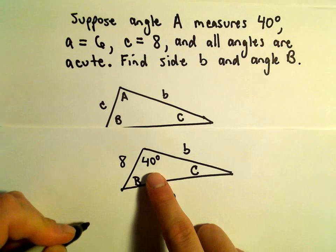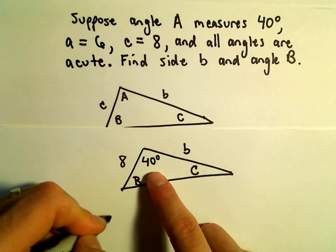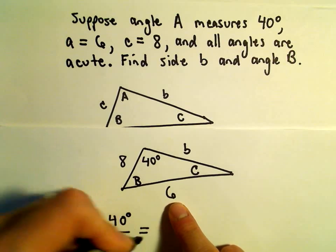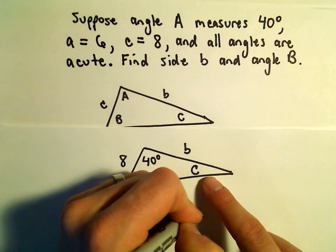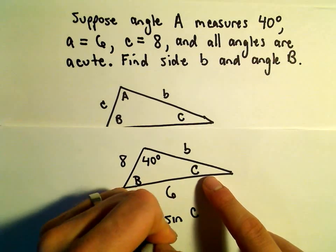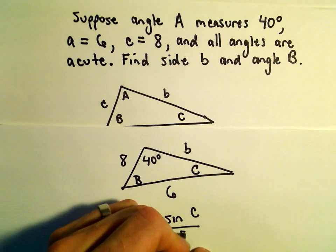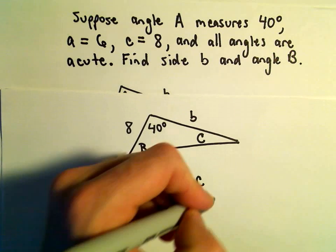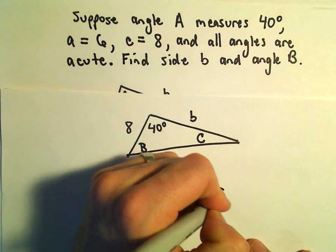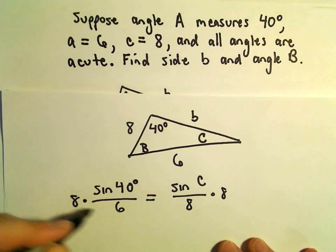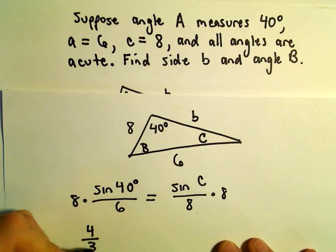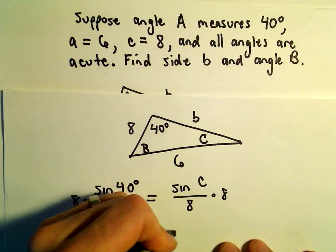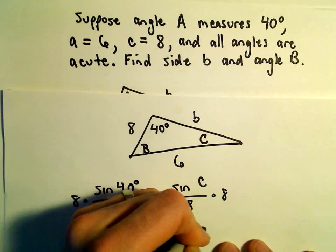I'm going to take sine of 40 degrees over 6, and that would equal sine of C over 8. What I'm going to do is multiply both sides by 8. So we'll get 8 over 6, or 4 over 3, times sine of 40 degrees, equals sine of C.